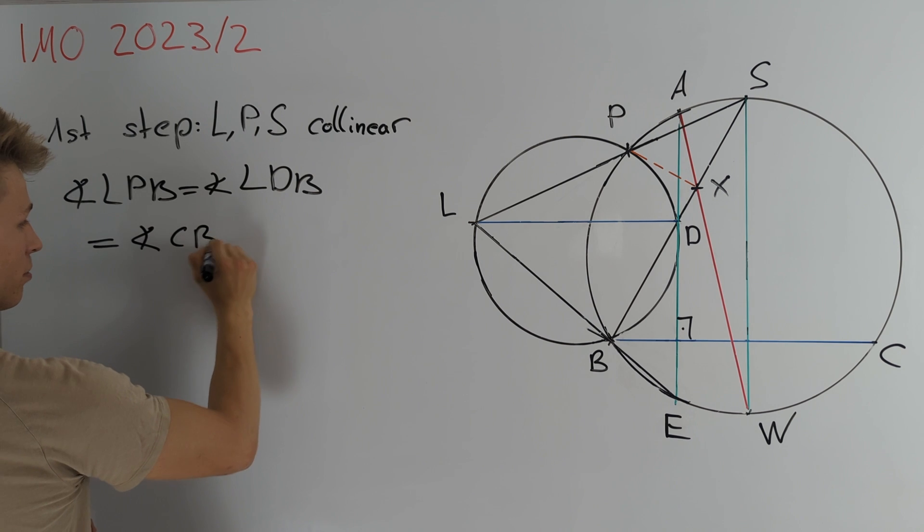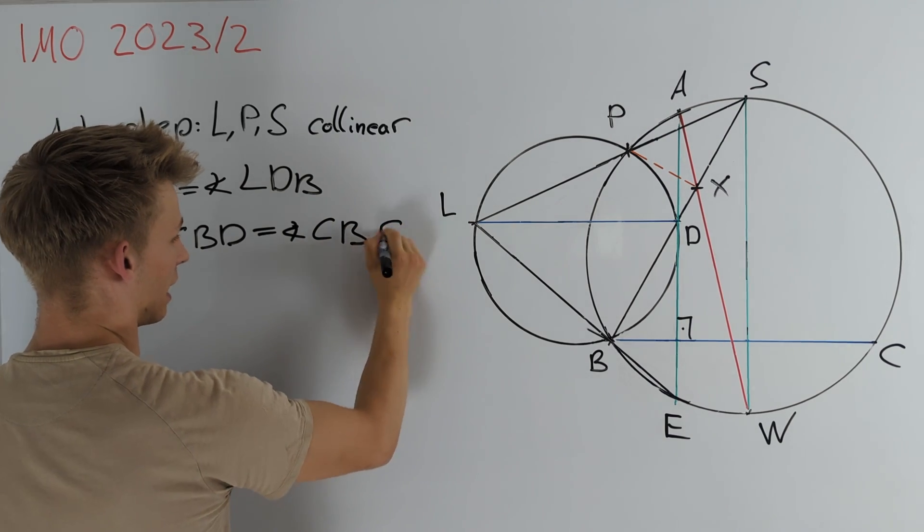And now we can use that these two blue lines here are parallel to get that this is equal to angle CBD and CBD is nothing but angle CBS.